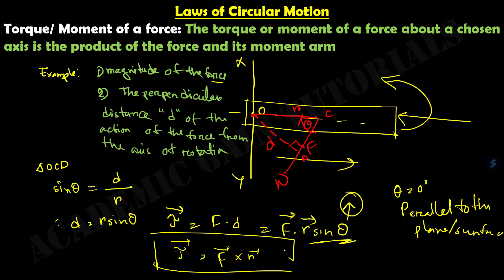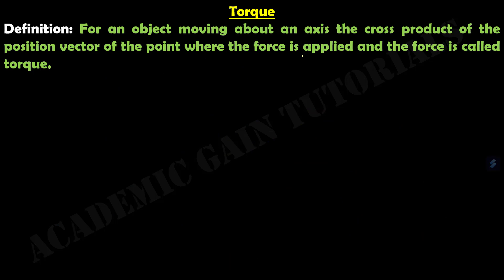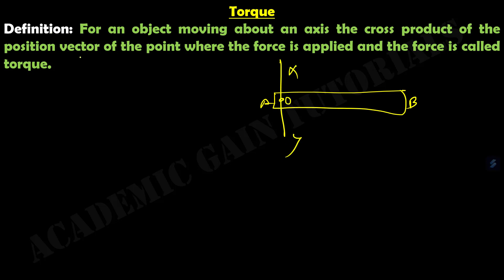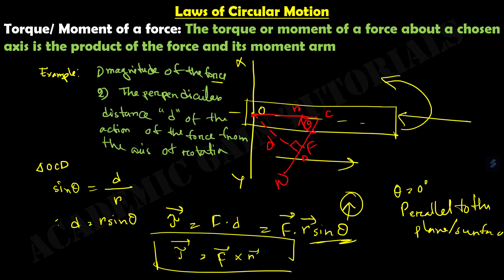We can also define torque as follows: for an object moving about an axis X-O-Y, the cross product of the position vector R of the point where the force is applied, and the force F applied at that point, is called torque tau. For vector representation, it should always be written as R cross F, not F cross R.